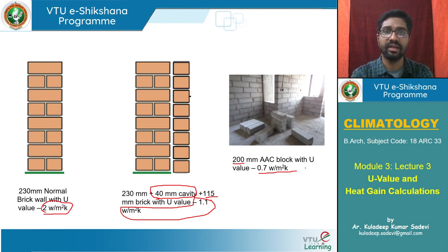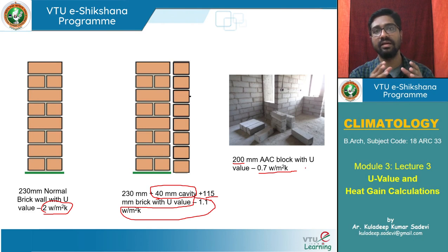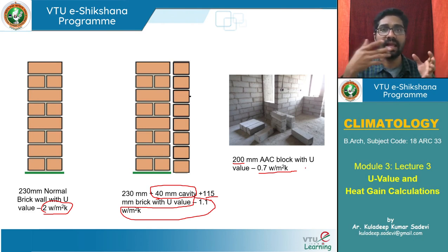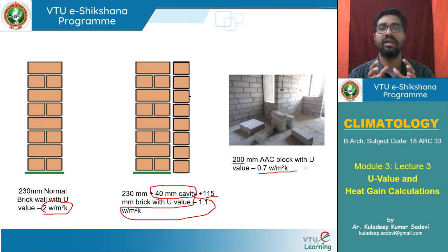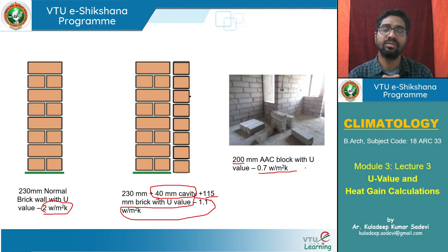We can change the material and thickness to change the overall U-value. By adding 230 mm brick with an air cavity plus another 115 mm layer, we reduce the U-value to 1.1 W/m²·K. Instead, using 200 mm AAC blocks can reduce it to 0.7 W/m²·K directly. The material choice should be based on outdoor temperature variations, time lag needed, and thermal mass desired.